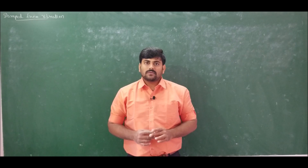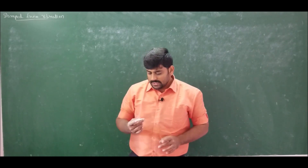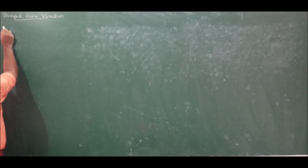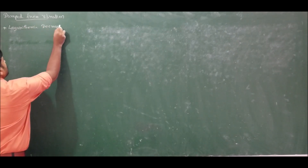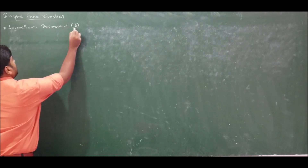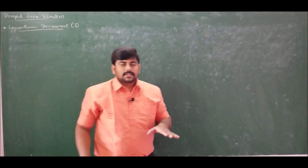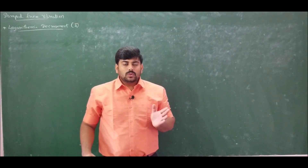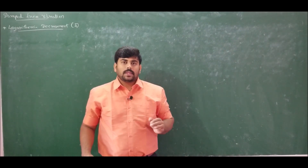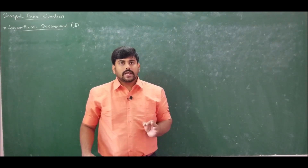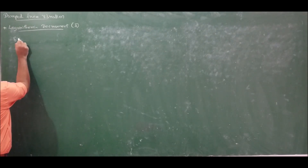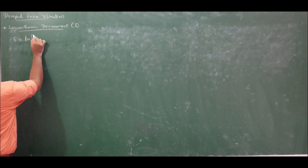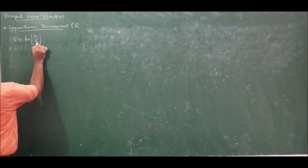In today's lecture, I am going to derive an expression for logarithmic decrement, denoted by delta. Logarithmic decrement is defined as the natural logarithm of the ratio of two successive amplitudes taken on the same side of the mean line of a vibrating system.